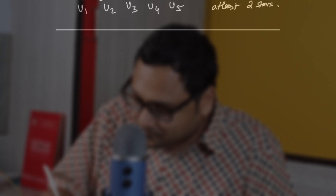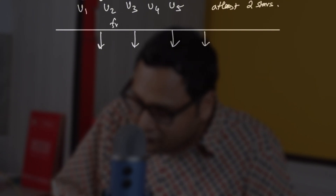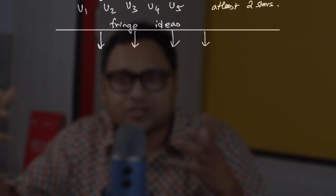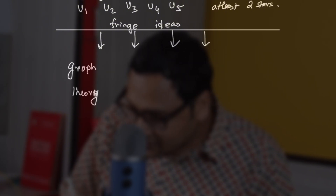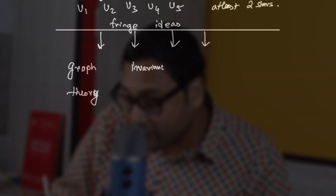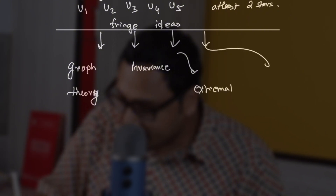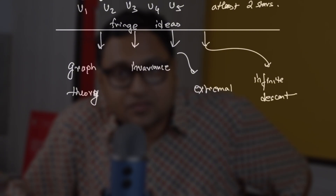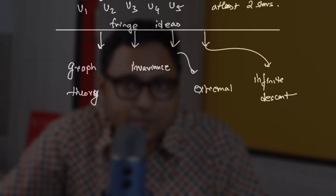I will also mention three or four fringe ideas — very powerful ideas for elementary combinatorics, but not as often used as the strategies already discussed. The first is graph theory, which is a subject in itself. The second is invariance, which is at the heart of mathematics. The third is the extremal principle. And the fourth is the principle of infinite descent. I'll mention these so that when I suggest books, you can look into these ideas.